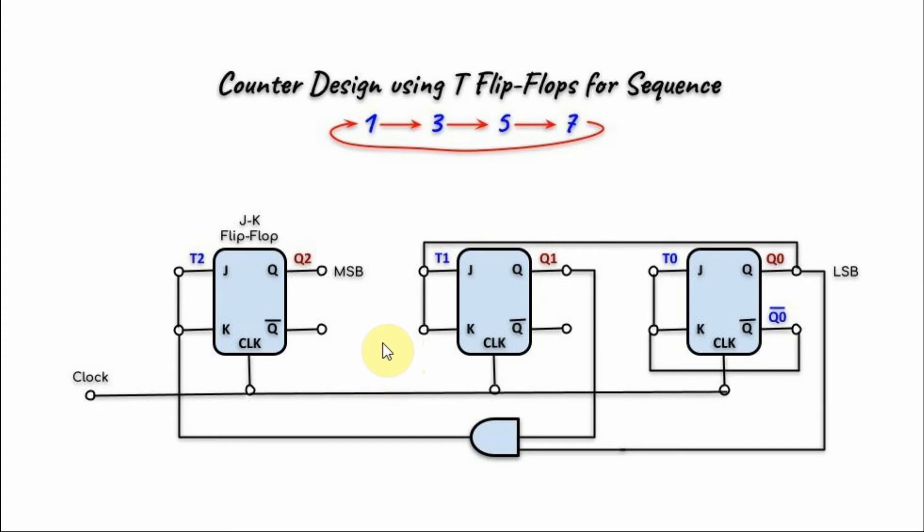For the T flip-flop, we are using a JK flip-flop, which can be converted to a T flip-flop by tying together the JK inputs. Here we have 3 outputs, where Q2 represents the most significant bit and Q0 is the least significant bit.